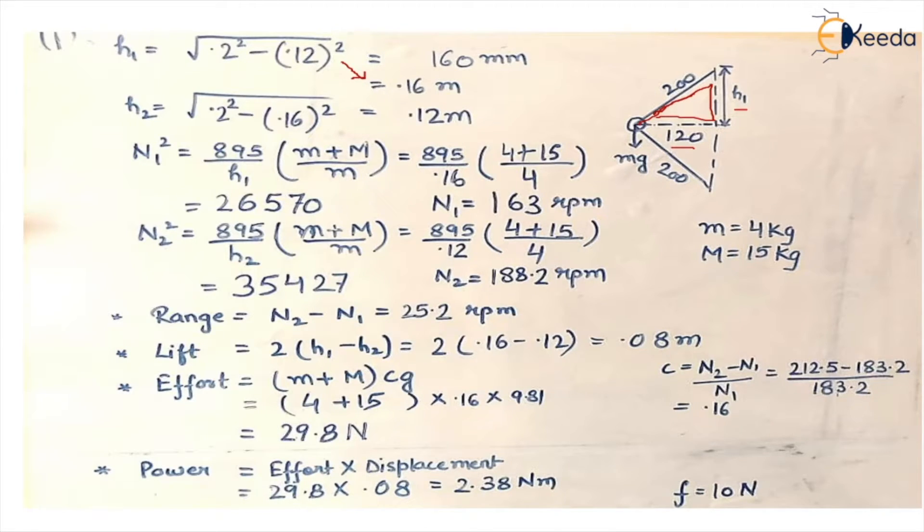Now we know the formula of speed for Porter governor which is n square equals 895 upon h times mass of ball plus mass of sleeve upon mass of ball. So we are given two heights at two different radius. We'll put the value for h1, get the value of speed which is 163 rpm, then put the value of h2 and the speed that we get is 188.2 rpm.